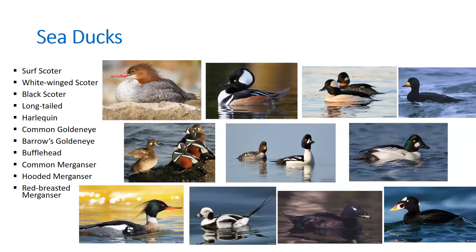Next we have Washington's remaining diving ducks, also known as sea ducks. The surf scoter is named for its ability to forage in breaking waves, easily diving through wave crests. The white-winged scoter is the largest of the three North American scoters. The black scoter is the most vocal. The long-tailed duck is also very vocal with a yodeling voice and has a complex cycle of plumages throughout the year, identifiable by its long scissor-like tail.